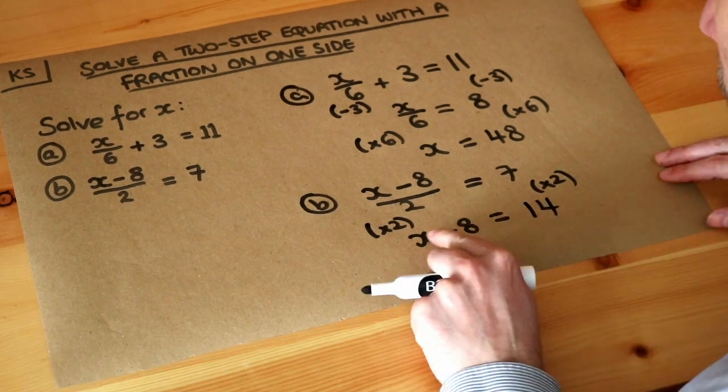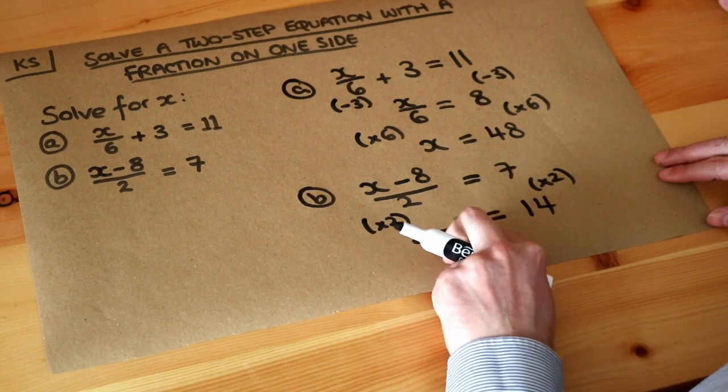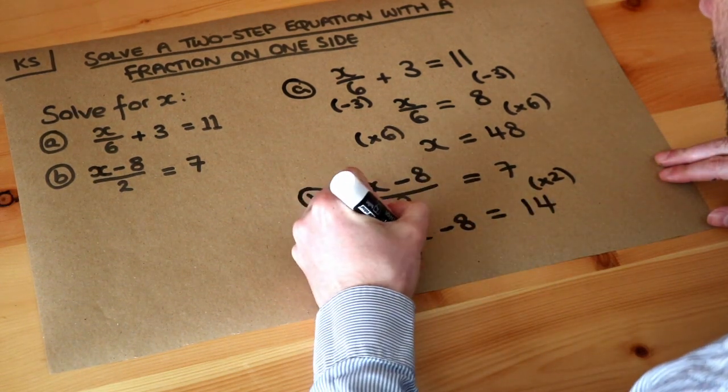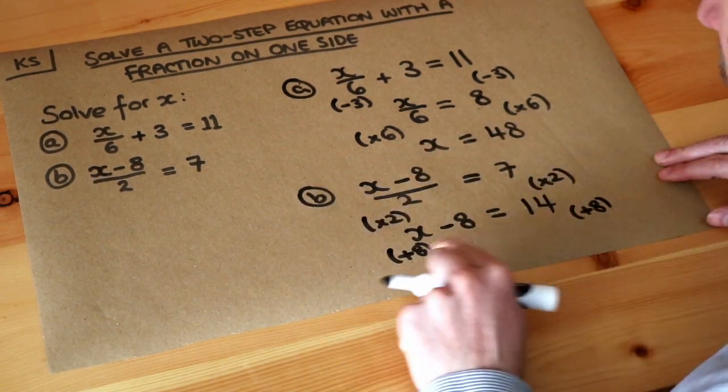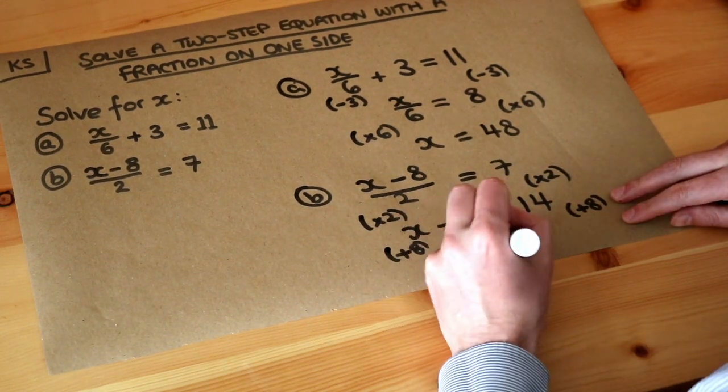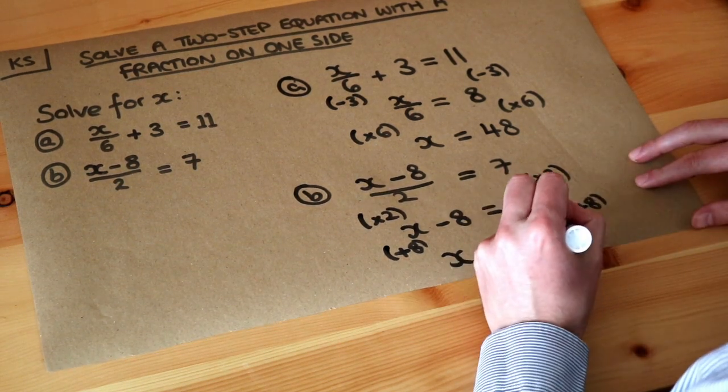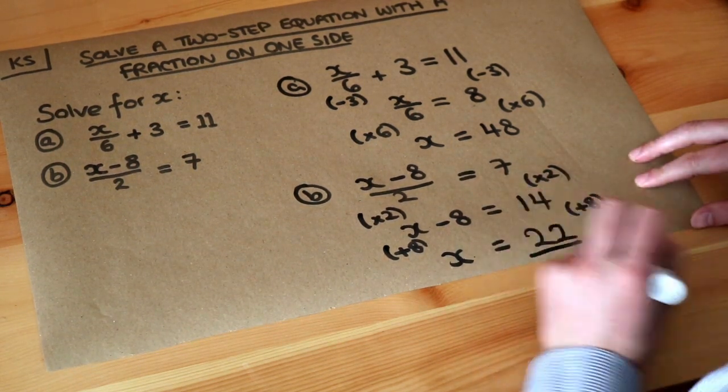And now on the home straight, what was the last thing that happened to x? Well we subtracted 8. We undo the subtract 8 by adding 8 to each side of the equation. So when we add 8 that gets rid of the minus 8 leaving just x. And on the right-hand side 14 plus 8 is equal to 22. And that is the final answer.